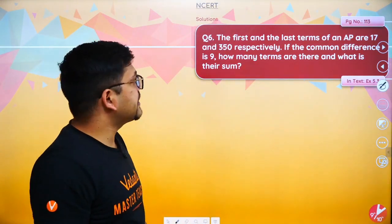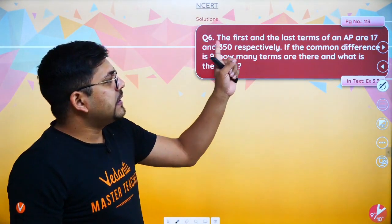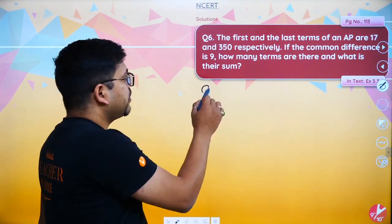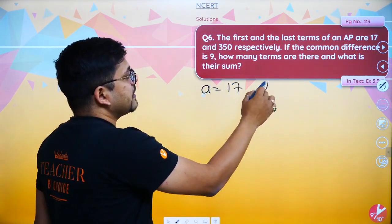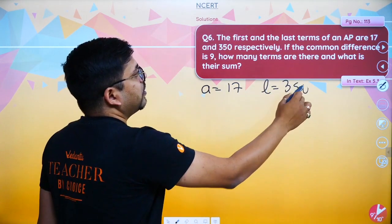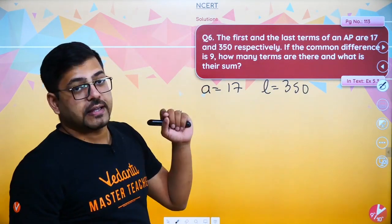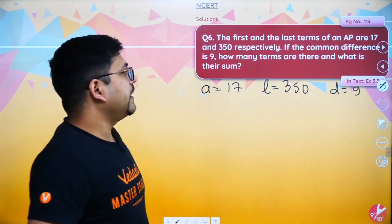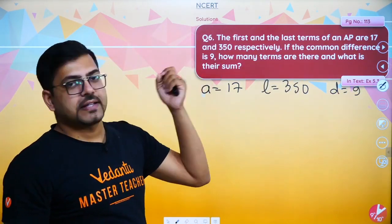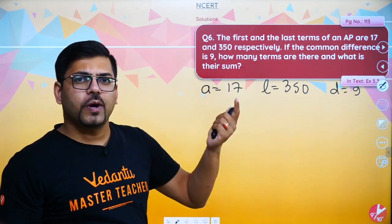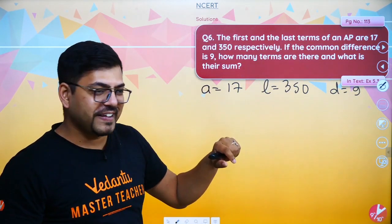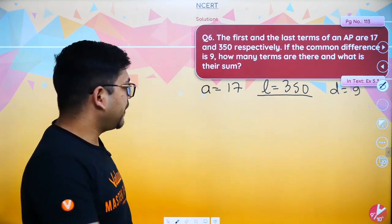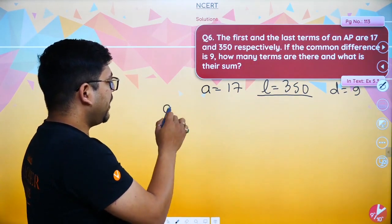Now let's go to question number 6. Question number 6 says the first term is 17 and the last term is 350. If the common difference is 9, this time D has been given. How many terms are there and what is their sum? So first, how many terms are there? You know the last term is the Nth term. So you put it in the formula. Nth term equals A plus N minus 1 into D.